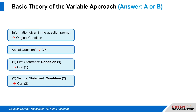Definition of Variable Approach. In a DS question, the information given in the question prompt is called the original condition, and the actual question is written as Q. We will call the information in the first statement condition 1, written in short form as CON1. We will call the information in the second statement condition 2, written in short form as CON2.